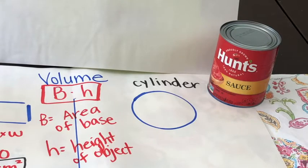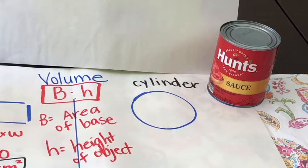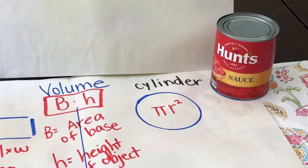In our next example we'll be finding the volume of a cylinder. The base of a cylinder is a circle, so we need the area of a circle. As you recall, the area of a circle is pi r squared — pi times the radius times the radius.